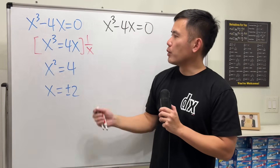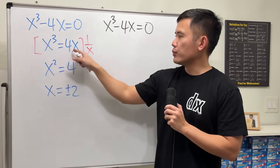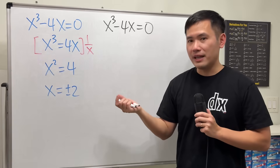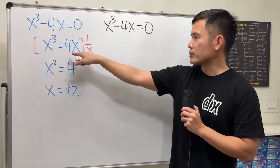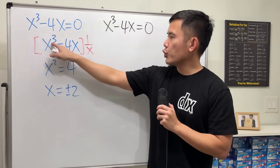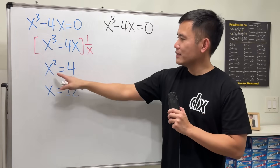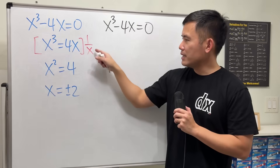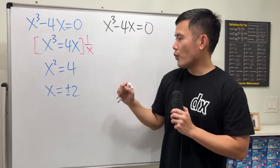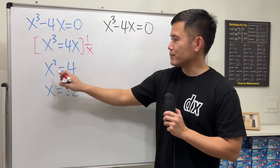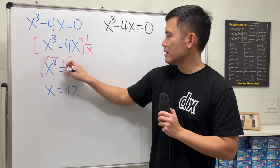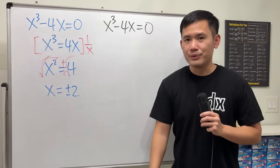We add the 4x to both sides and get x cubed is equal to 4x. And we have x on both sides, so we are going to divide it by x, which is the same as multiplying both sides by 1 over x. x cubed divided by x gives us x squared. 4x divided by x, the x's cancel, we just get 4. So x squared is equal to 4. We take the square roots on both sides and put a plus or minus — x is equal to plus or minus 2.